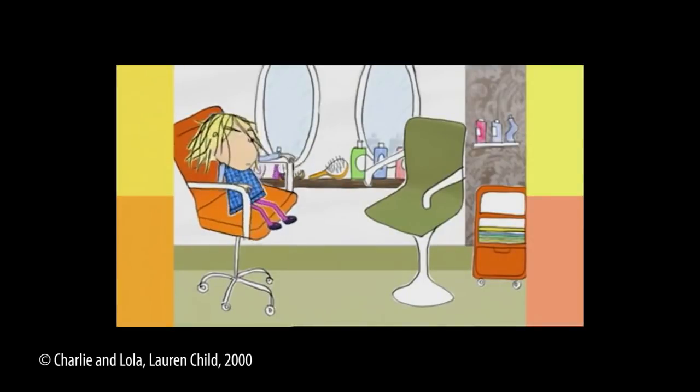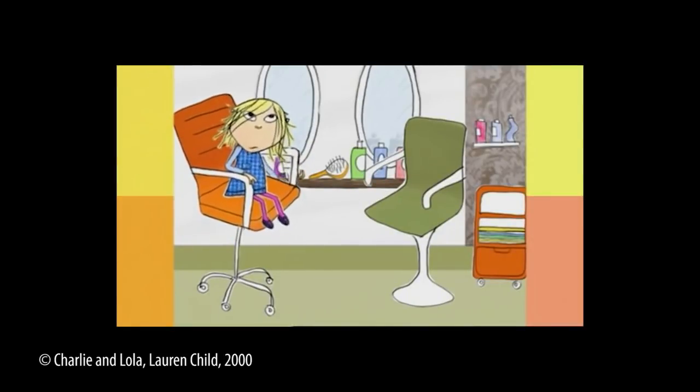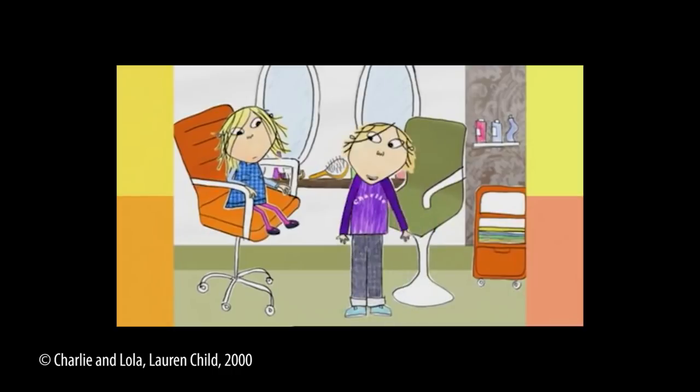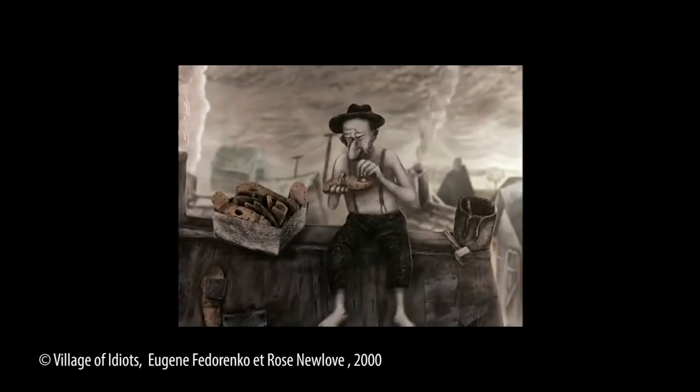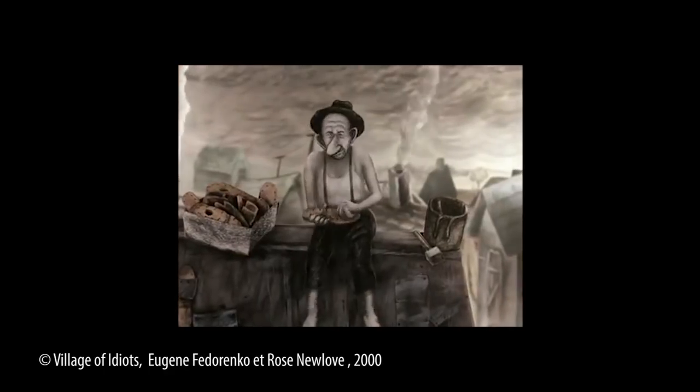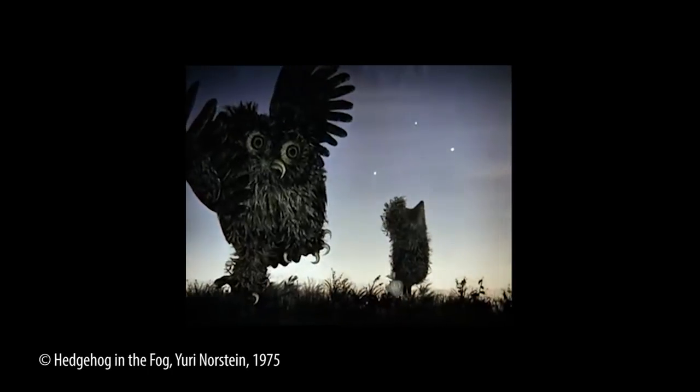Hand-drawn animations often exhibit simple and plain motion, like the heads and arms of Charlie and Lola, the main character of Village of Idiots, and the animals in Hedgehog and the Fog.